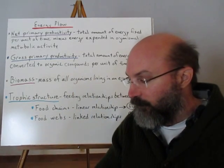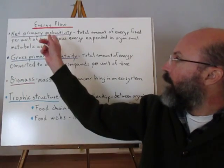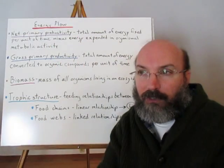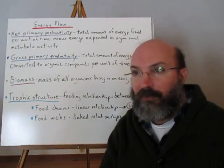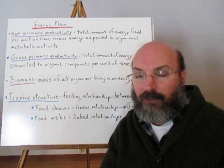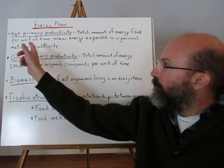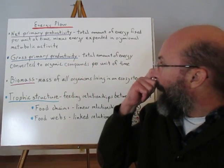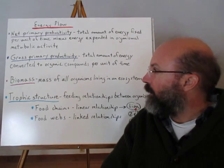When we talk about energy flowing through systems, one key concept is net primary productivity — the total amount of energy fixed per unit of time minus energy expended in metabolic activity. Think of it like a paycheck: your net pay is always less than your gross pay because taxes and deductions come out. Similarly, net primary productivity is always a smaller amount. Gross primary productivity is the total amount of energy converted to organic compounds per unit area per unit of time — the total energy actually going into those organisms.